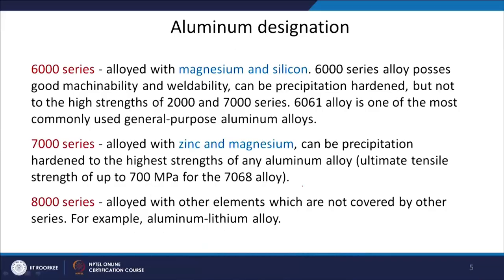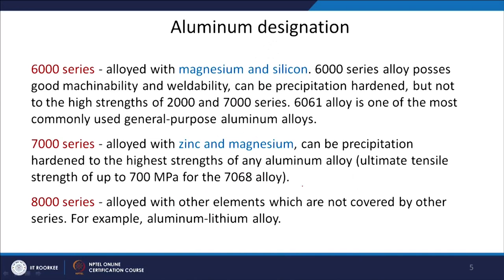The 6000 series is alloyed with both magnesium and silicon, possessing good machinability and weldability. It can be precipitation hardened, but not to the high strength of the 2000 or 7000 series. The 6061 alloy is one of the most commonly used general purpose aluminium alloys — if you see aluminium used for general purposes, most probably it will be 6061, which contains both magnesium and silicon.